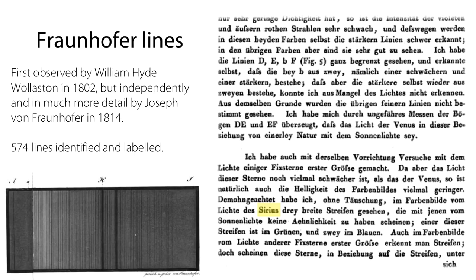Fraunhofer observes the sun and he observes these sun lines — Sonnenlichter. He also did observe the stars; here he's made reference to lines of Sirius, and in this extract he's also discussing Venus, and how the lines are different.